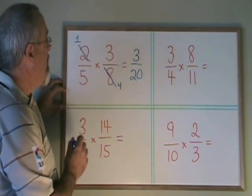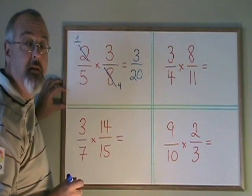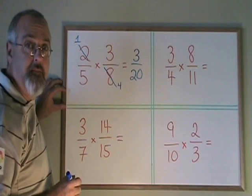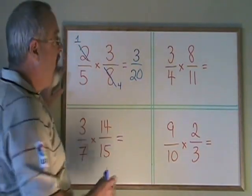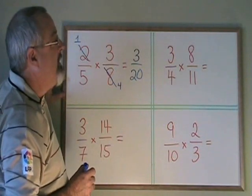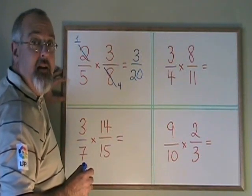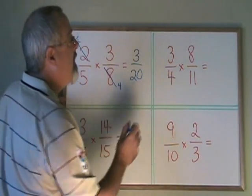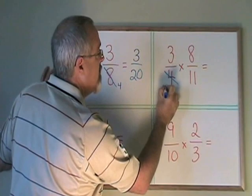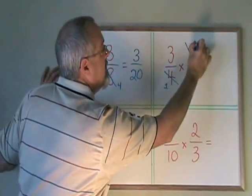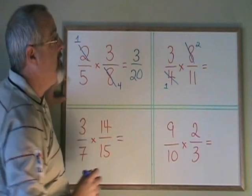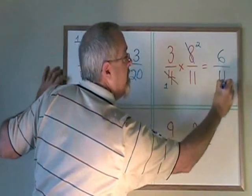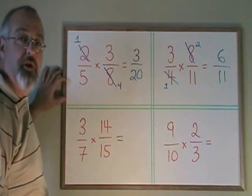So you don't have to have the same number on the top and on the bottom when canceling — you just need a number on the top and one on the bottom that share a common factor. Let's try another one: 3/4 times 8/11. The 4 and the 8 share a common factor of 4, and one is on the top while the other is on the bottom, so we can cancel. 4 divided by 4 is 1, and 8 divided by 4 is 2. Now I multiply: 3 times 2 is 6, and 1 times 11 is 11. My final answer is 6/11, which cannot be reduced any further.